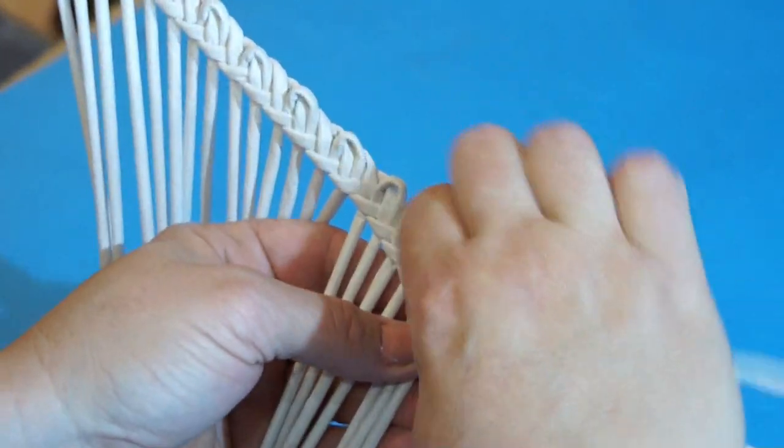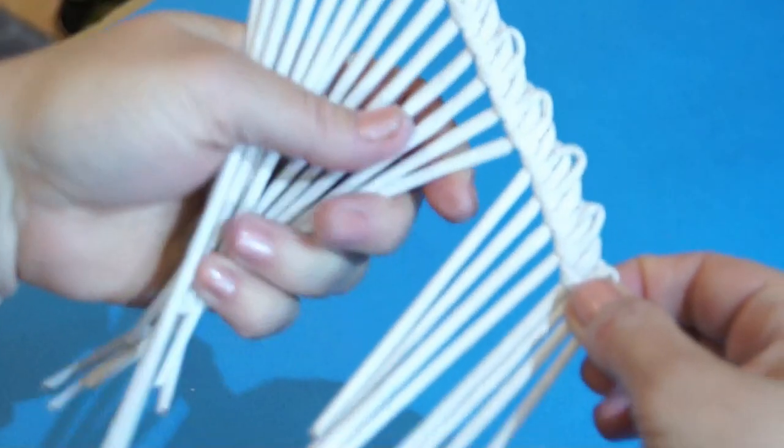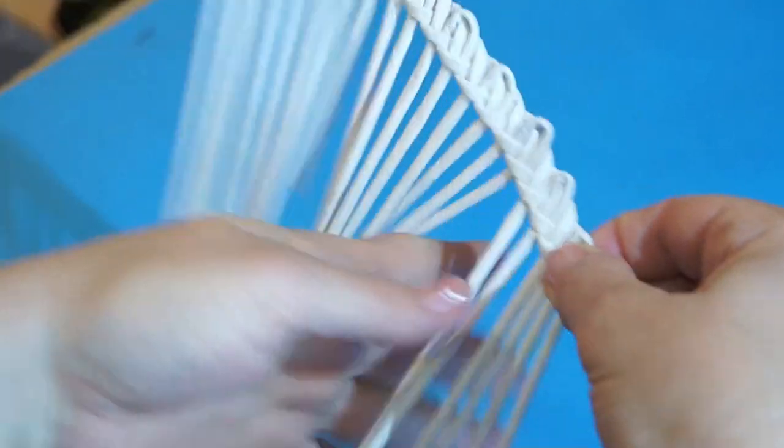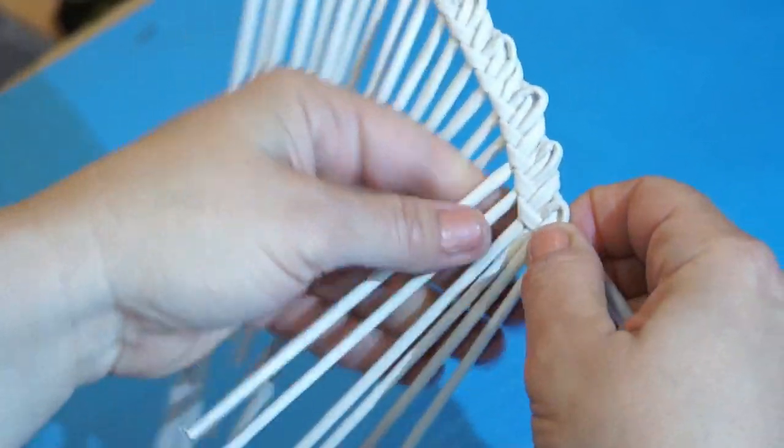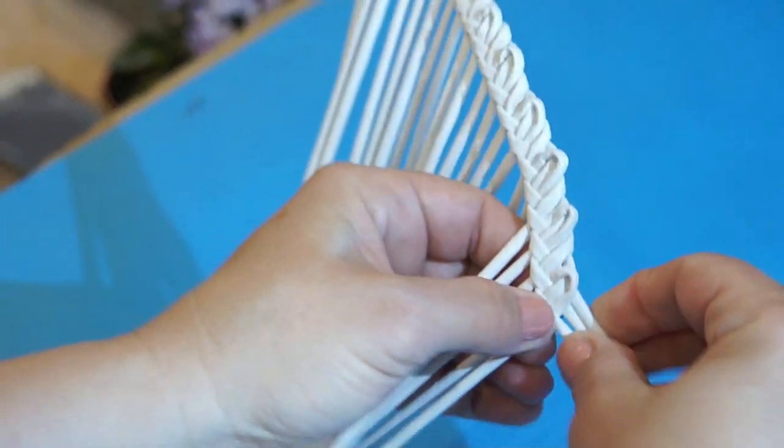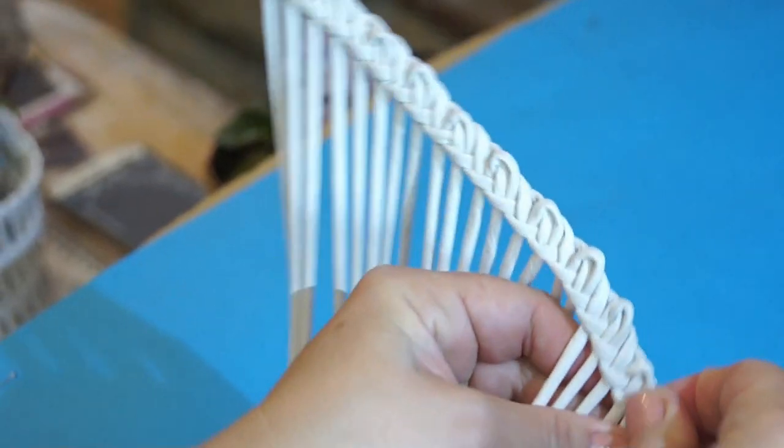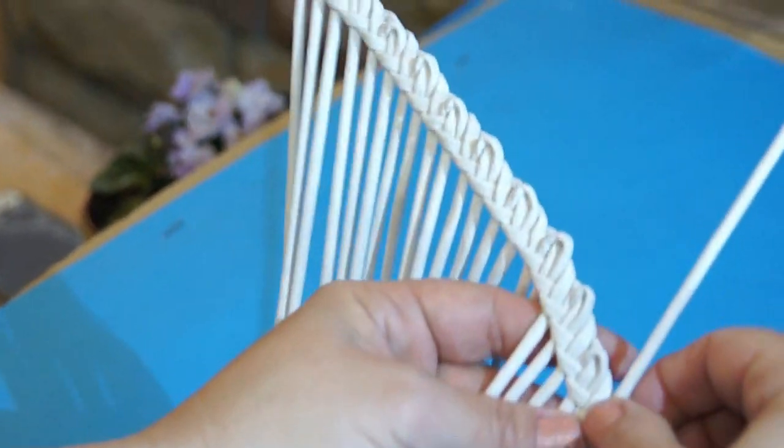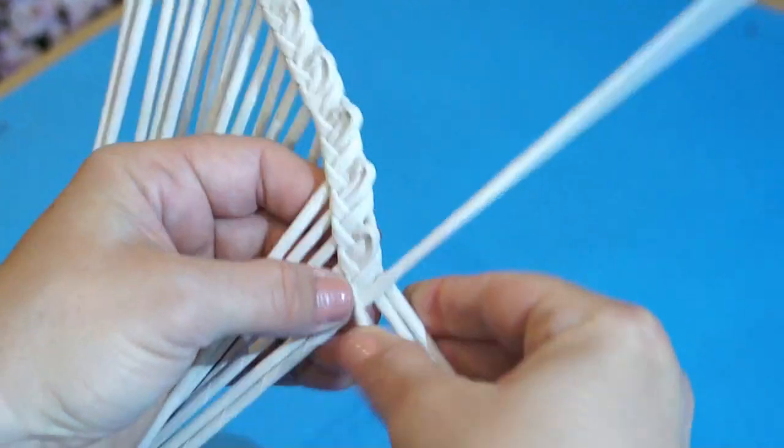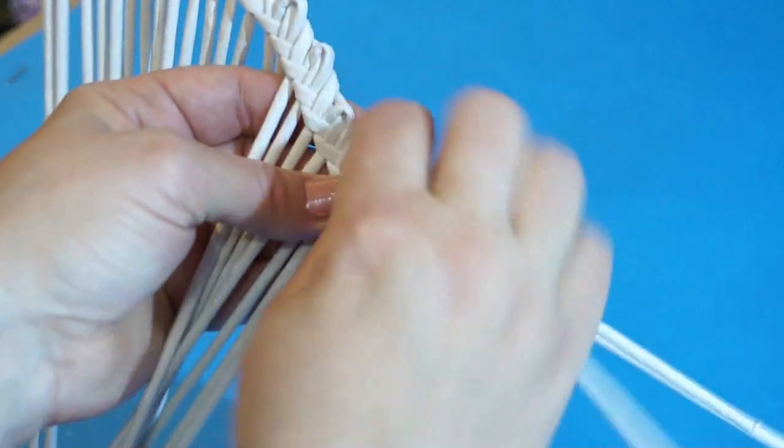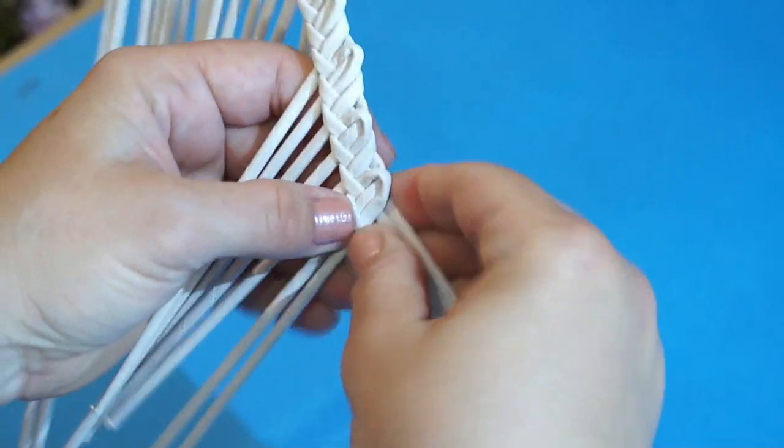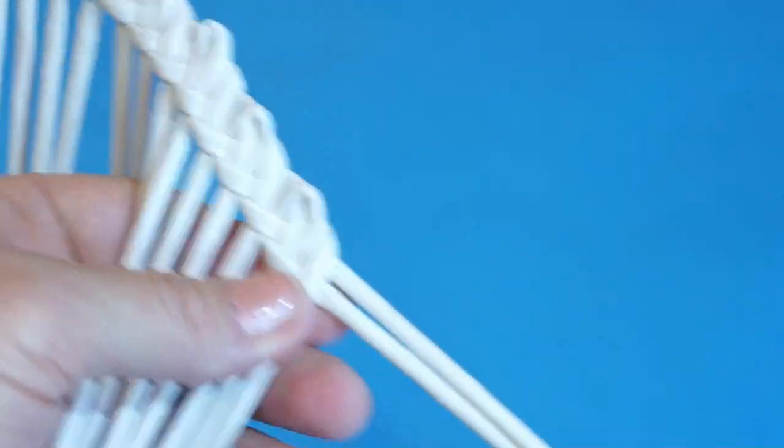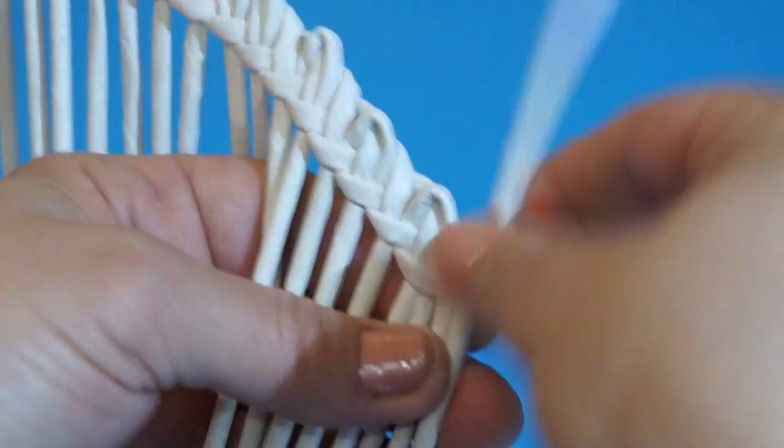To make the process of weaving easier, I shift the poles in my fingers. One, two, three. One, two, three. The braid is becoming longer and longer.